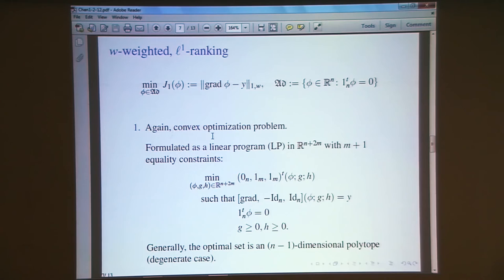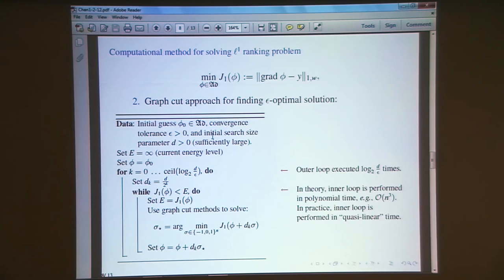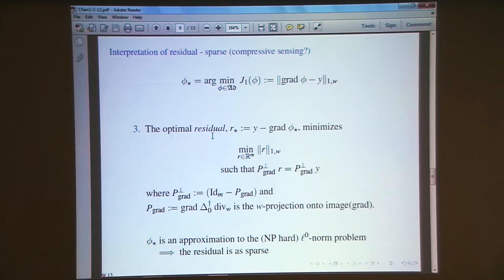The L1 version is this. Minimize this functional, the L1 norm with these weights. You can solve it. It's a linear program. The solution is not going to be unique. It's an n-1 dimensional polytope. There's the algorithm. It's a graph cut. It was done by Jerome Darbon, who is sensational at this stuff. So it's relatively fast. You can interpret the residual in the sense of compressive sensing. The residual is sparse, we think.